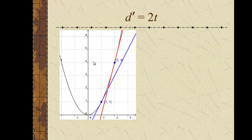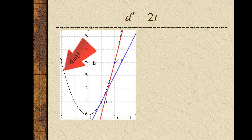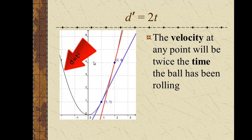So as far as Galileo is concerned, he wasn't using x and y, he was using distance and time. The slope of the distance curve is equal to 2t. The rate of change of distance is the velocity. So the velocity at any point is twice the time that the ball has been rolling.